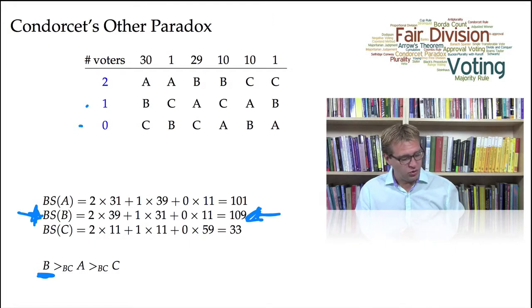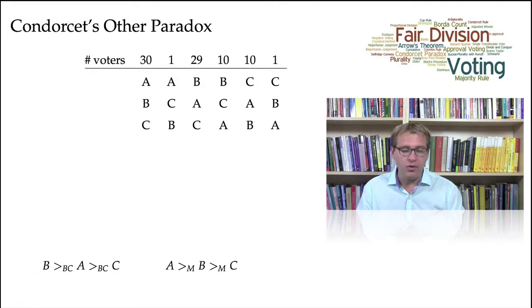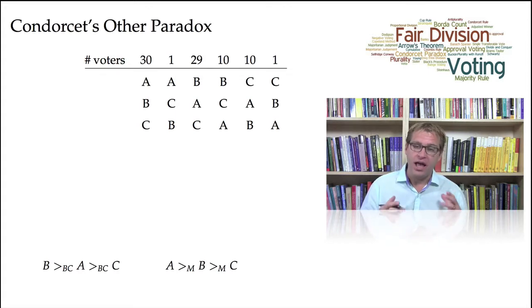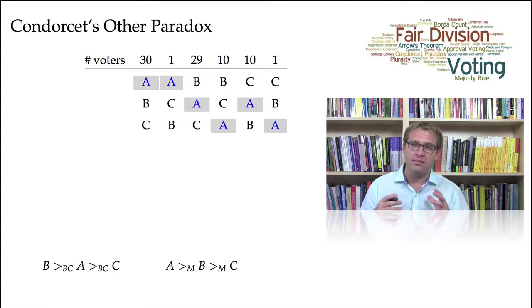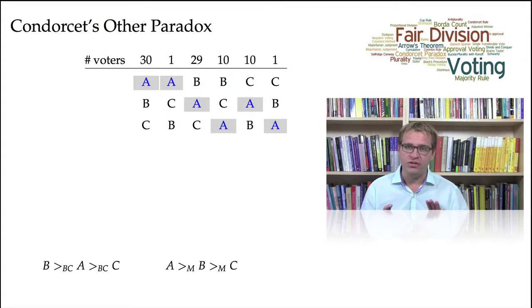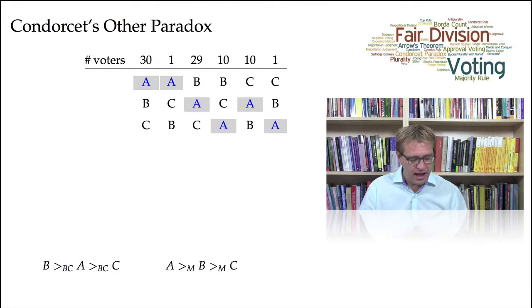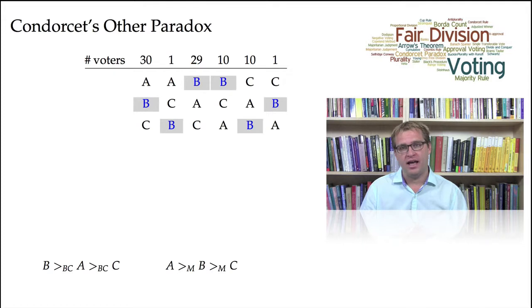According to Condorcet, we compare each of the candidates in a head-to-head election. If we do that, we see that candidate A is actually the Condorcet winner. A beats both candidate B and C in a head-to-head election. It's important that you either trust me or stop the video to double-check that A beats both B and C in a head-to-head election, and B beats C in a head-to-head election.